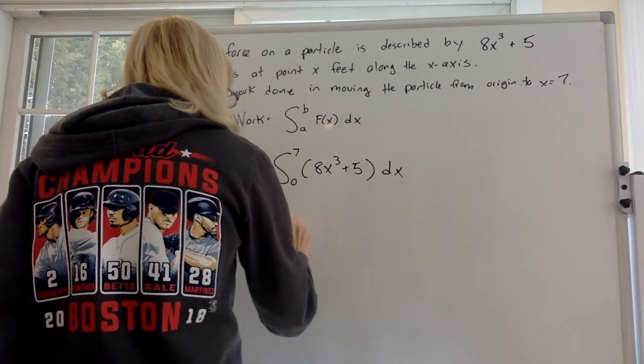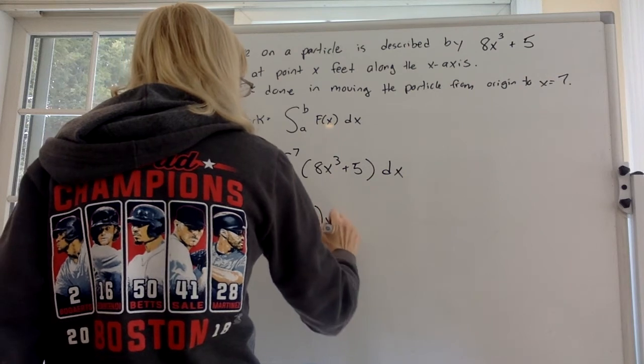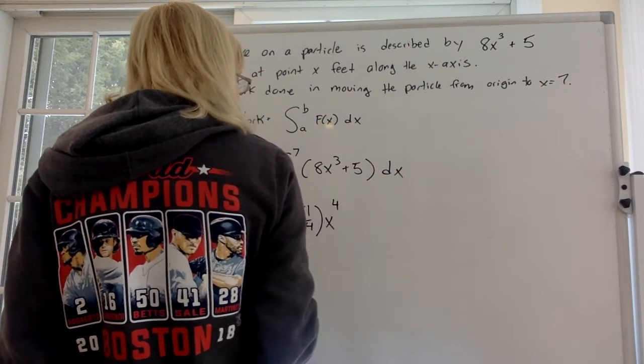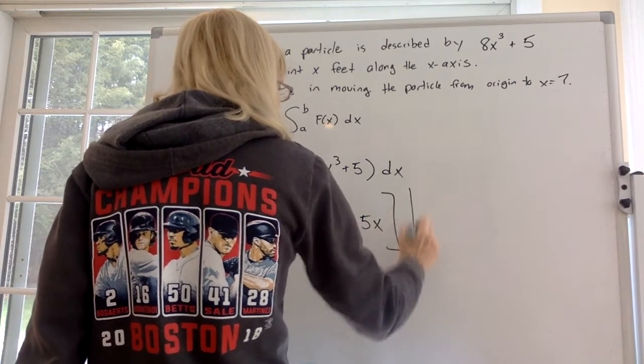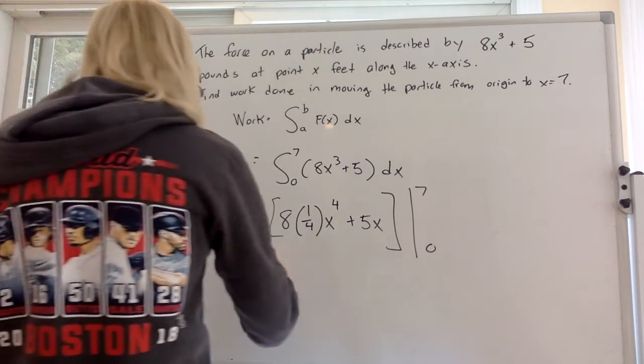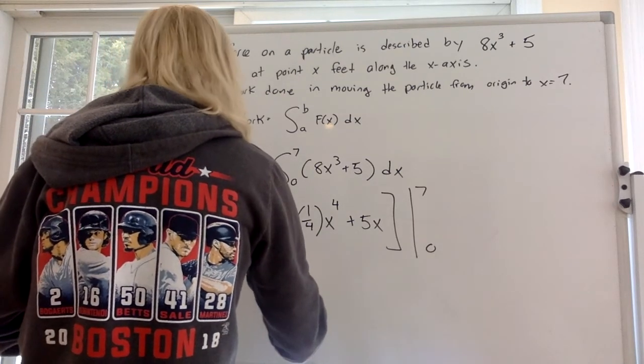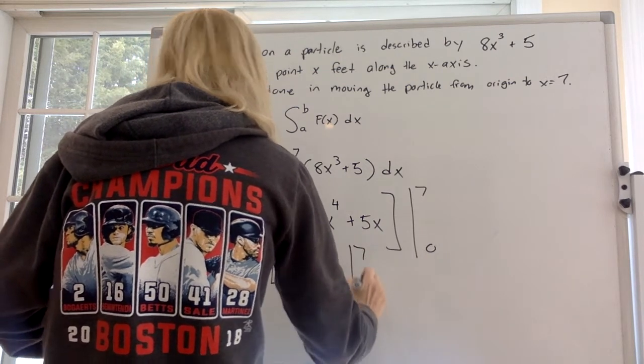So the antiderivative of x cubed is 1 over 4 x to the 4th. Antiderivative of 5 is 5x. And that all goes between 7 and 0, right? So if we simplify this, it's 2x to the 4th plus 5x, all between 7 and 0. So what do we get?